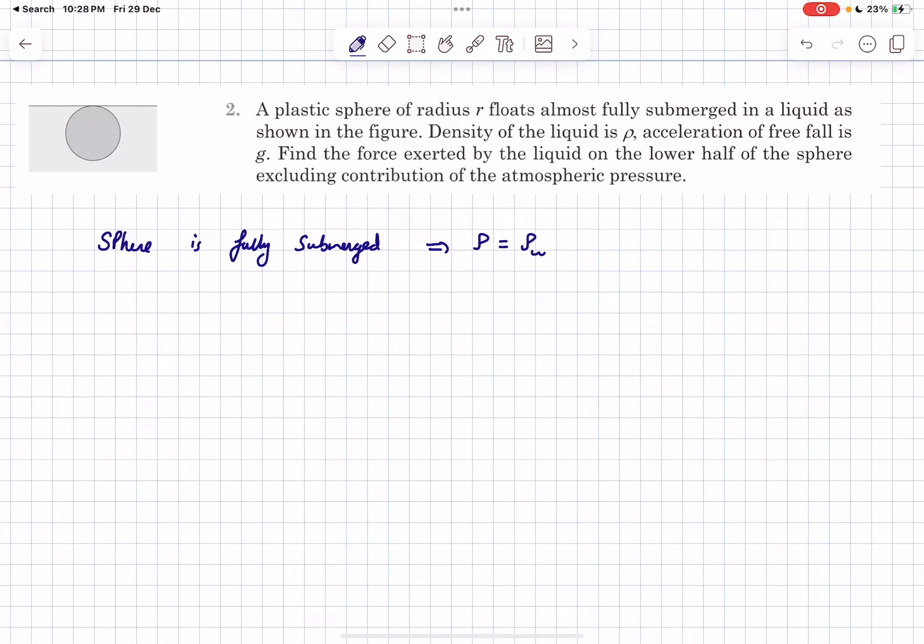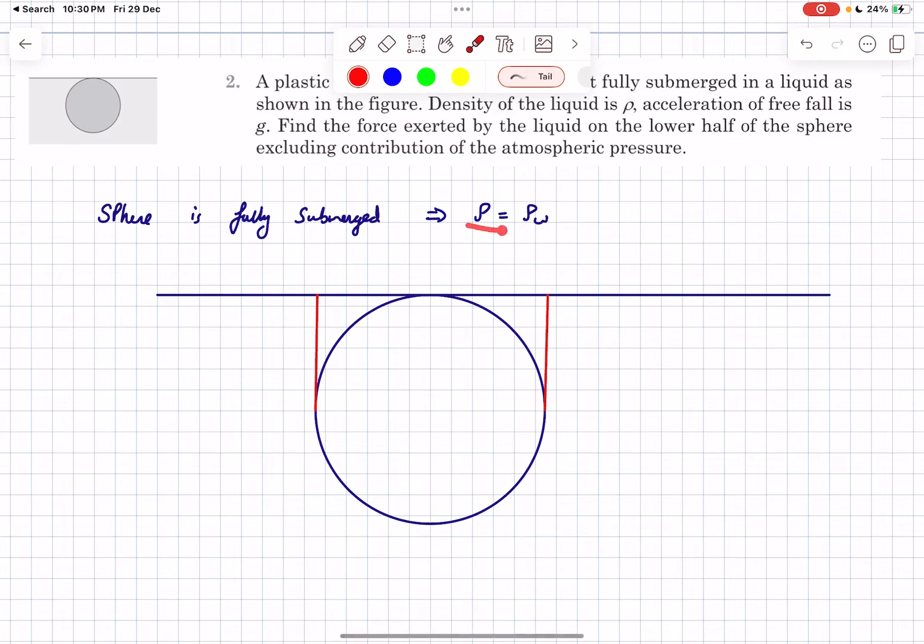The first key thing to note is that the sphere is fully submerged, which essentially means that the density of the sphere would equal the density of the fluid. Now, as the densities of the two bodies are equal, we can consider the sphere plus the fluid above it as one single body.